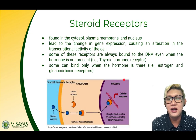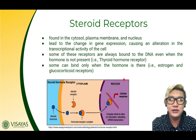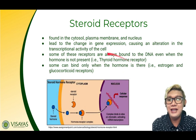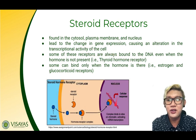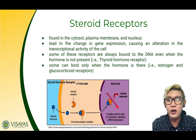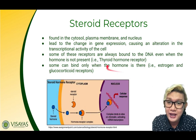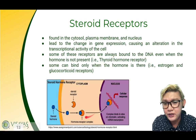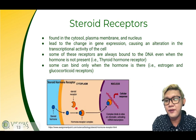Steroid receptors are found in the cytosol, in the plasma membrane, and in the nucleus. They lead to changes in gene expression that cause an alteration in the transcriptional activity of the cell. Some receptors are always bound to the DNA even when the hormone is not present, like the thyroid hormone receptor. Some can bind only when the hormone is present, like estrogen and glucocorticoid receptors. This is how receptors act upon the binding of the steroid hormone.